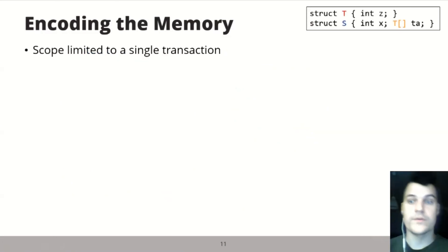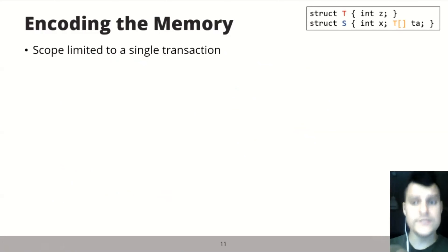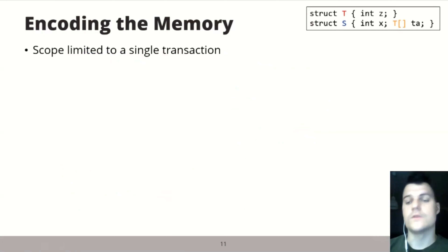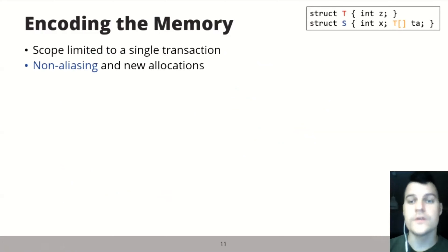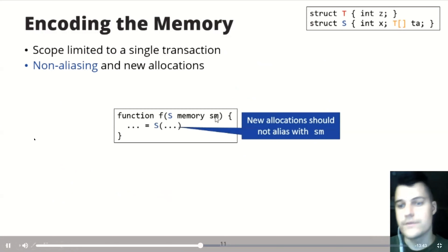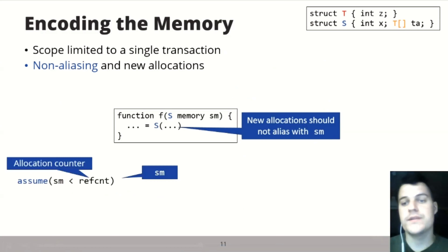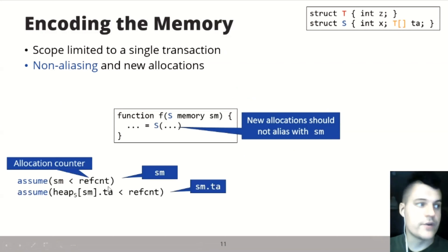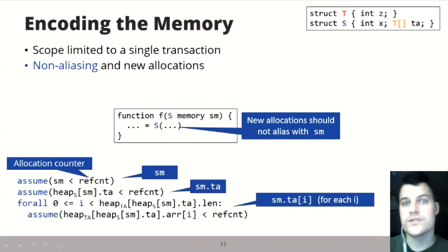A nice aspect of Solidity's memory model, compared to traditional languages, is that its scope is limited to the execution of a single transaction, which makes the heap model tractable. We don't have to reason about allocating permanent and global data. However, one thing that needs to be ensured is that new allocations should not alias with previous ones — for example, allocating something in function f should not alias with a previously received SM. This can be done by assuming the parameter is less than the allocation counter, recursively for its members including the array and each array element.